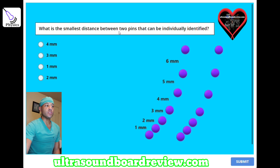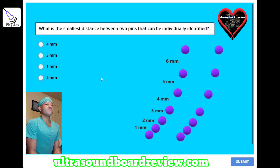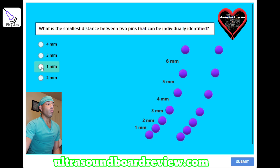What is the smallest distance between two pins that can be individually identified? A, 4 millimeters; B, 3 millimeters; C, 1 millimeter; or D, 2 millimeters. The answer is C, 1 millimeter.